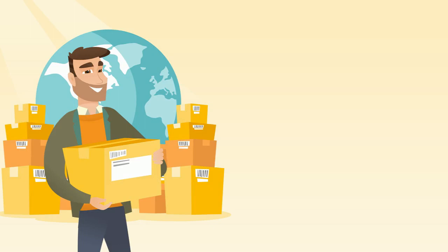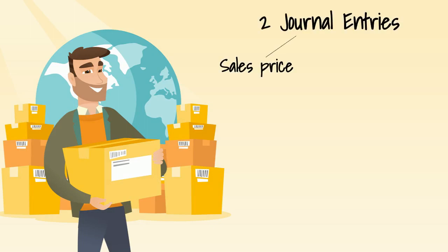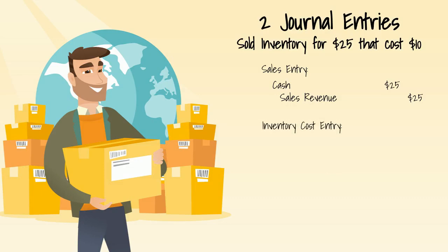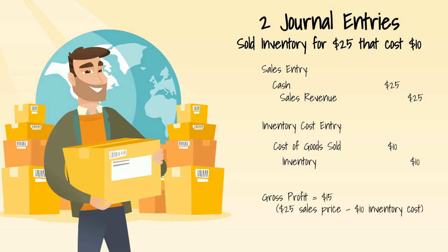Remember when we talked about selling inventory and we said that all sales have two journal entries — one deals with the sales price and one deals with the inventory cost. For example, assume you sold an item for $25 that cost you $10. You sold this to a customer for cash. The journal entry to record the sales price would be a debit to cash for $25 and a credit to sales revenue for $25. The journal entry to record the inventory cost would be a debit to cost of goods sold for $10 and a credit to inventory for $10. You made a gross profit of $15 on that sale.